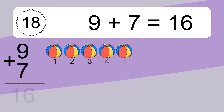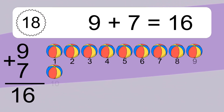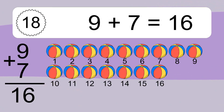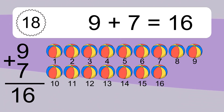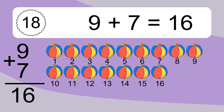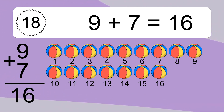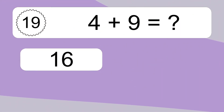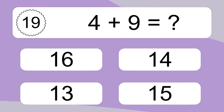1, 2, 3, 4, 5, 6, 7, 8, 9, 10, 11, 12, 13, 14, 15, 16. 4 plus 9 equals what?